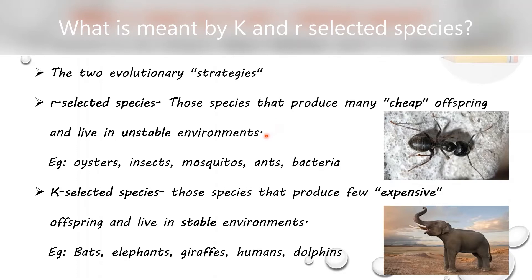K selected species are those species that produce few expensive offspring and live in stable environments. K selected species are mainly mammals. They produce only a few offspring — only one or two in one reproduction — and energy investment for reproduction is very large. They are living in stable environments.